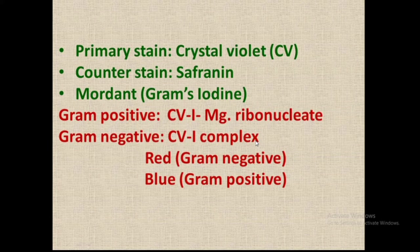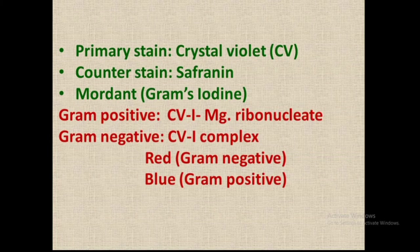On treatment with decolorizing agent — 95% ethanol — the crystal violet–iodine–magnesium ribonucleate complex in gram positive bacteria remains unchanged. But the crystal violet–iodine complex in gram negative bacteria undergoes decolorization; the ethanol extracts this complex from gram negative cells. On restaining with safranine, gram negative bacteria take the safranine stain and appear red, while gram positive bacteria retain the crystal violet and remain blue.